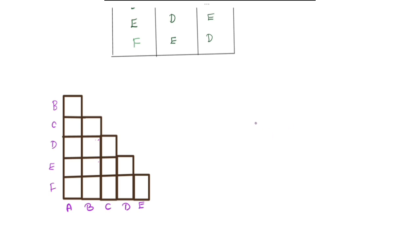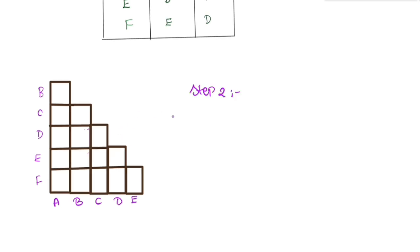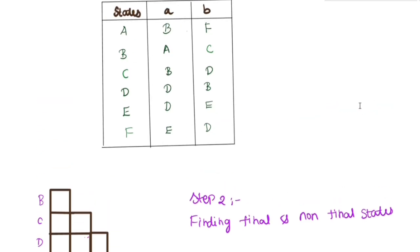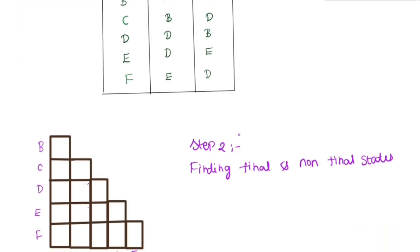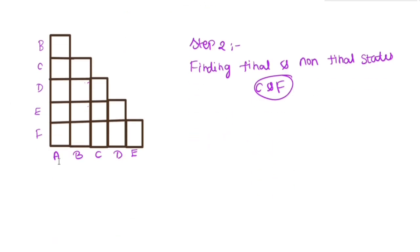Step 1 is the Transition Table. Step 2 is finding the final state and non-final state. You will find the non-final states — the final state is the double circle. C and F are the final states. C and F are equal — the final state is equal, not equal to the non-final state.